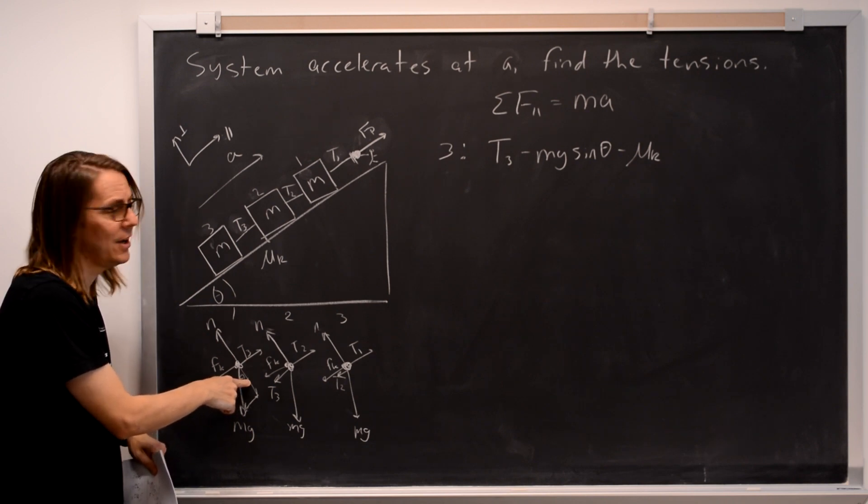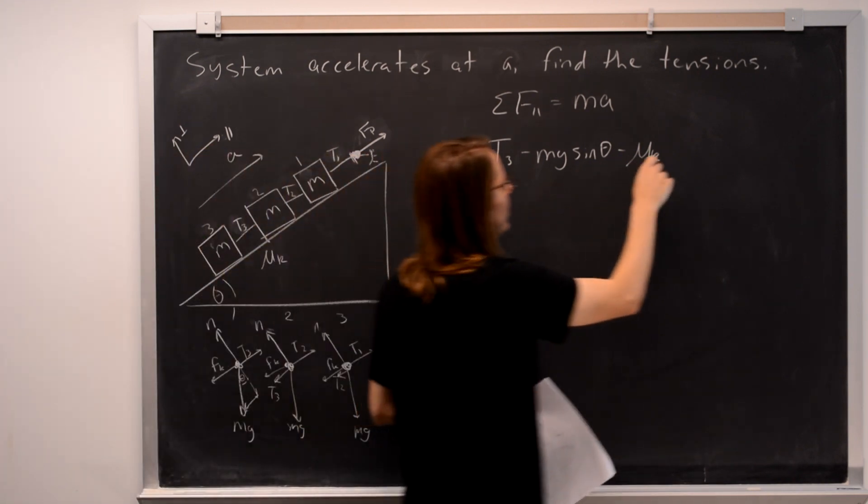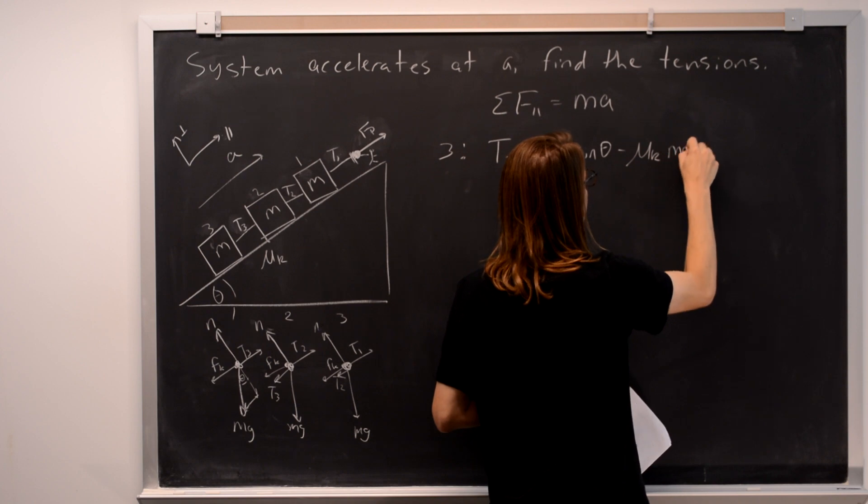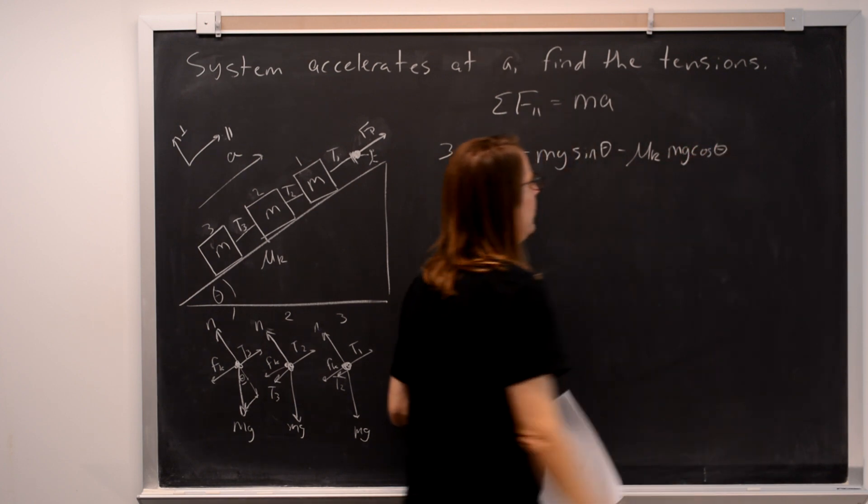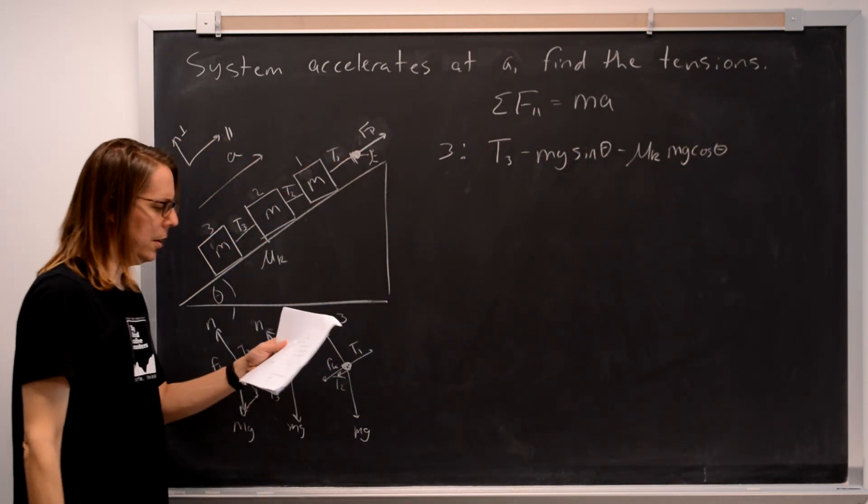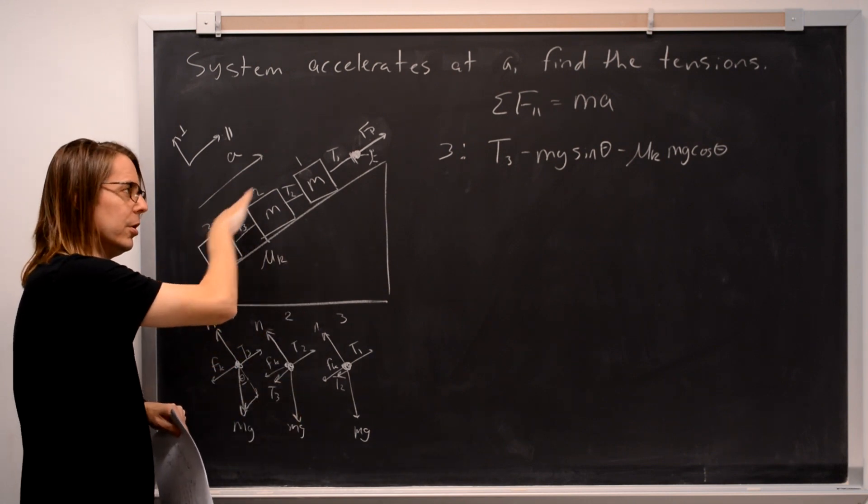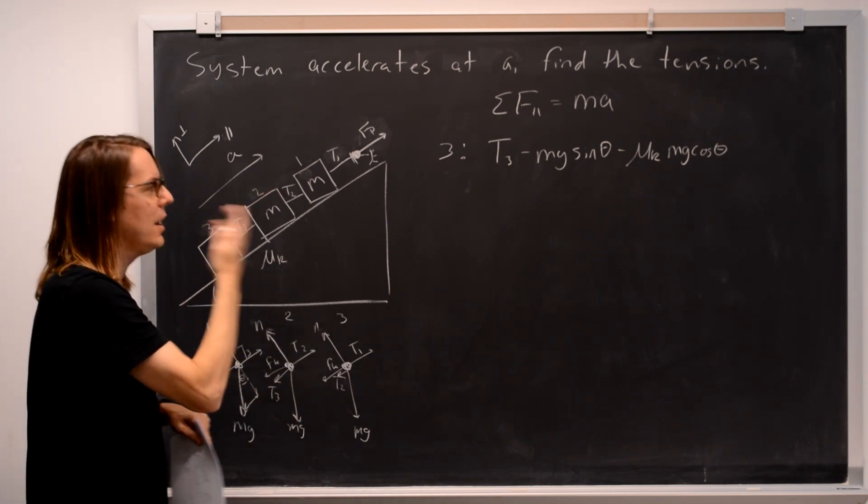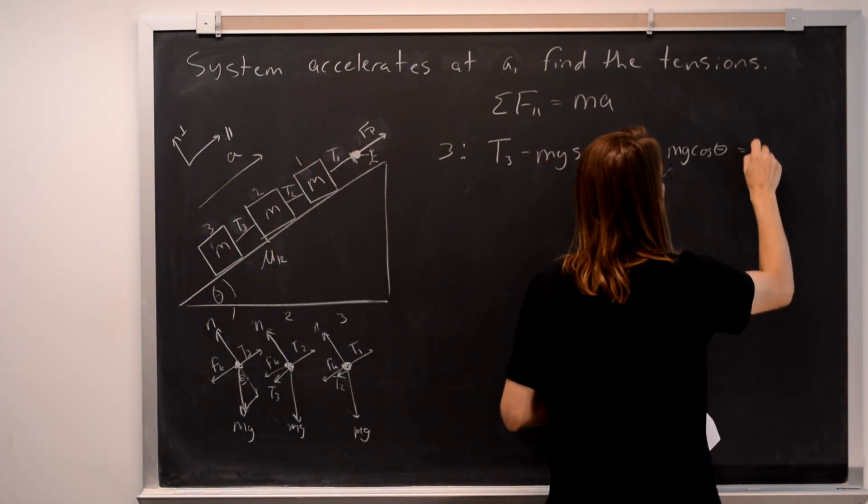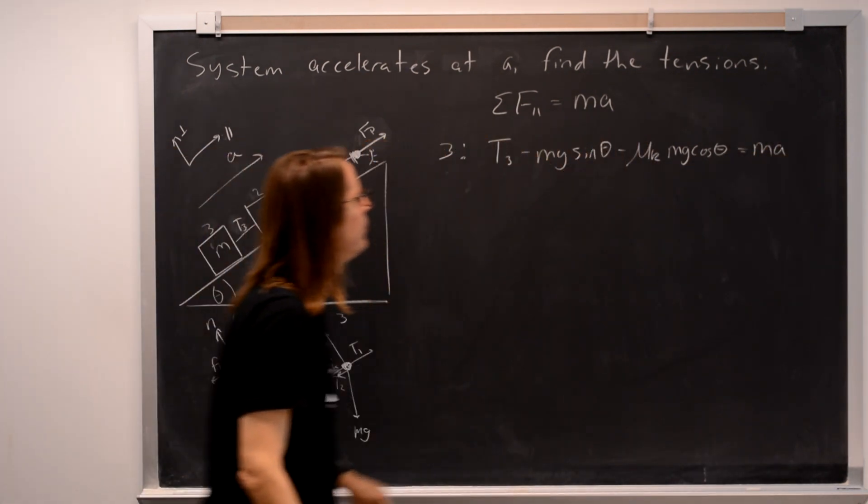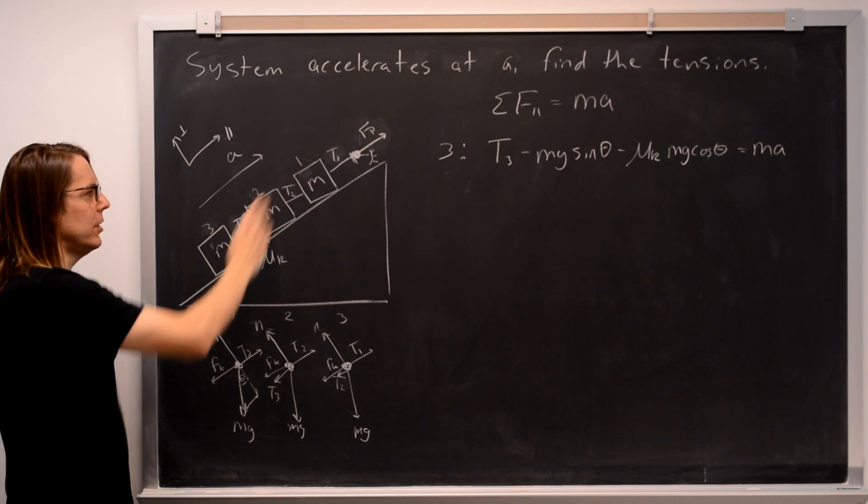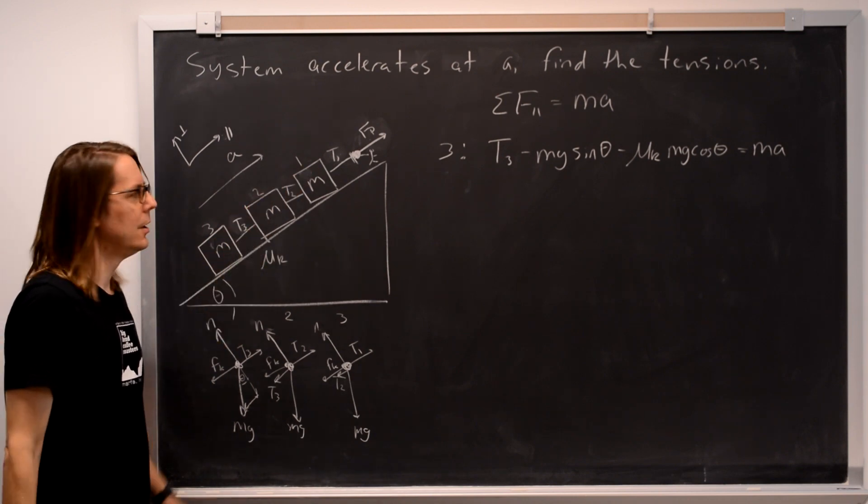So one step, I'm going to do all the y kinematics and just write minus mu k times the normal force, which is mg cosine theta. So there are your forces along the horizontal or along the plane. And that's equal to ma. The mass of this one and the acceleration that's going up, not so bad.